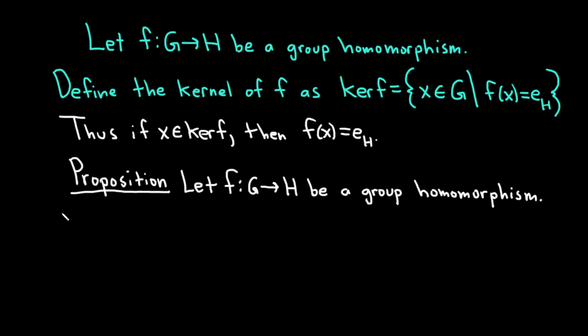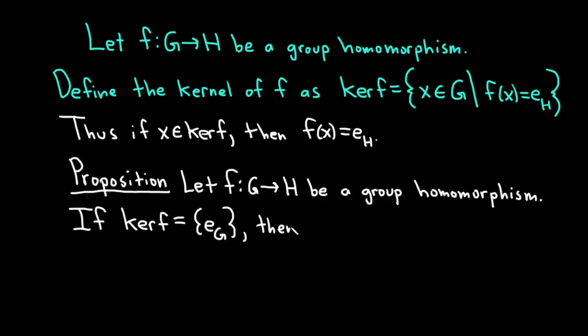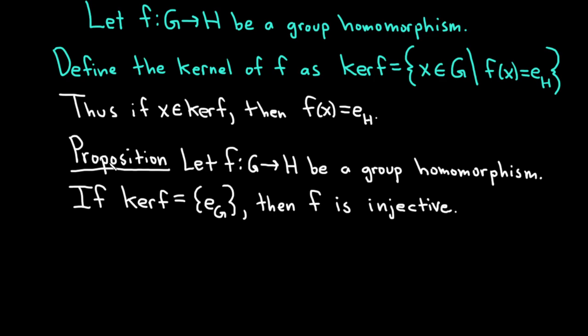We're going to prove that if the kernel of f contains only the identity element, then f is an injective function. So if ker(f) equals the set containing only the identity element in G, then f is injective. Notice the kernel is a subset of G — it's actually a subgroup as well — but for now we're just going to prove that if it equals the set containing the identity element, then f is injective.